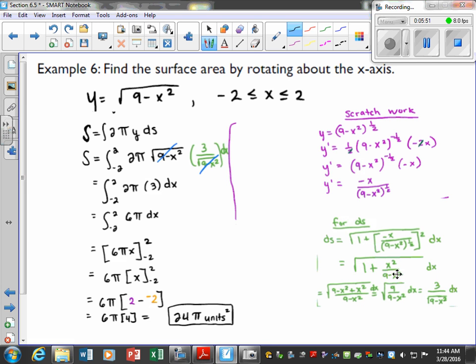Algebraically, I want to put these over the same common denominator, so that would just give me (9-x²) + x², which then I simplify the top, and I just get 9 over my common denominator. Square root of 9 is 3, and this is just left under the square root, dx.